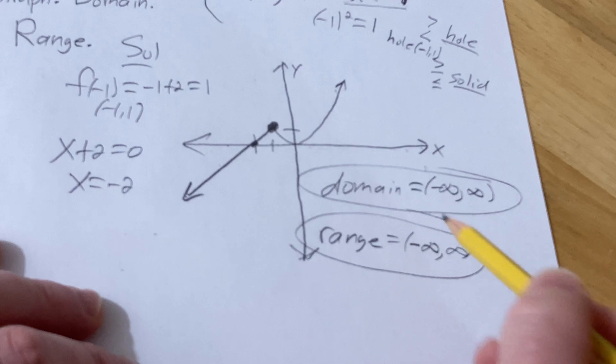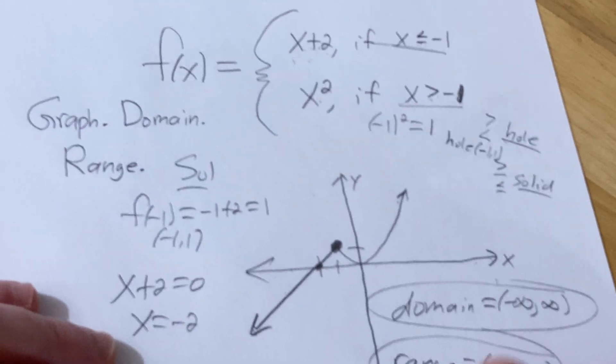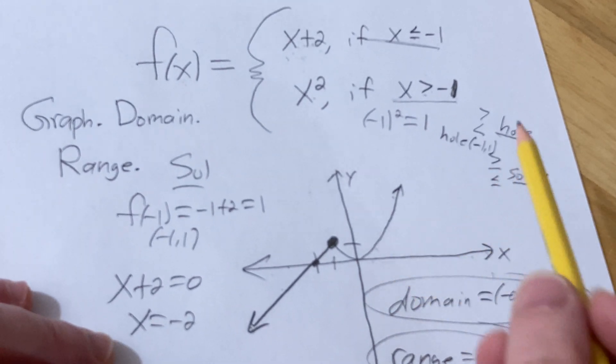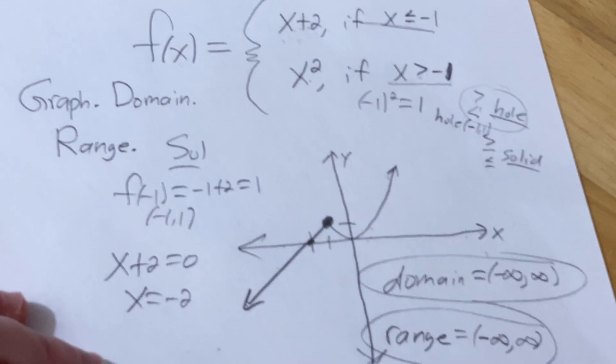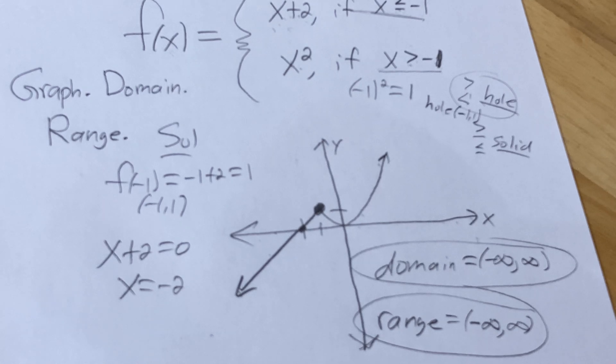So that would be the domain, and that would be the range. This is a nice example because it starts with the hole, and the hole comes about from this, and then the hole gets filled in, so it's a little bit interesting. I hope this video has been helpful to someone. Good luck.